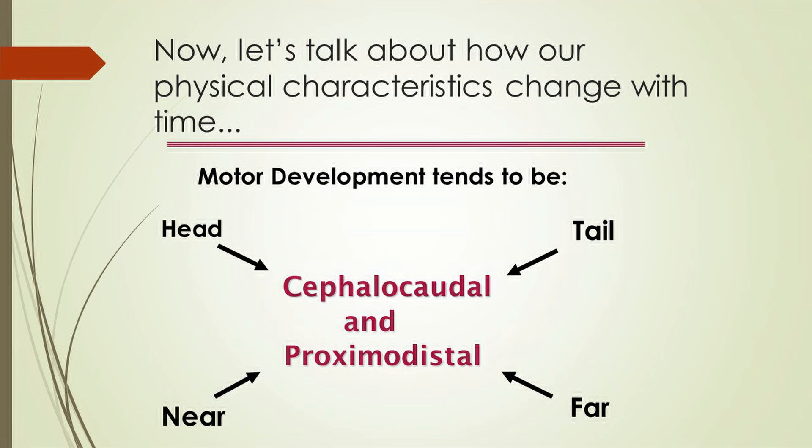Cephalo means head, caudal means tail, so motor development occurs head to tail. It also occurs in a near to far, or proximodistal, fashion. When we consider motor development after birth, the child is going to be able to lift the head up and move the head around, and this occurs long before the child is able to walk.